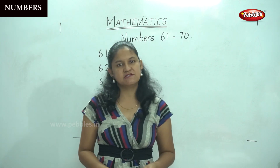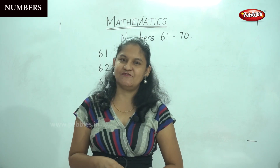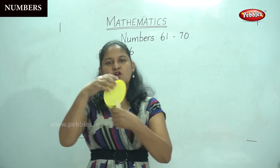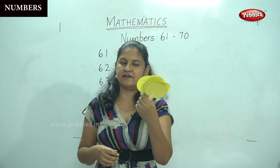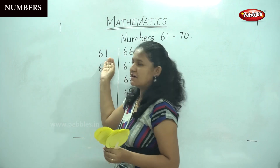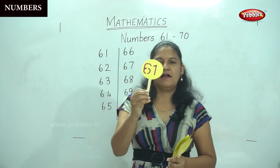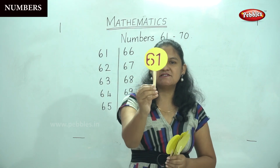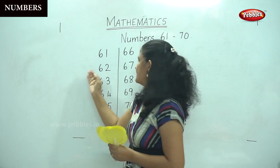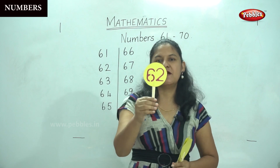So these are the numbers from 61 to 70. Now we will learn to identify the numbers using small placards. So these are called small placards that are in my hand. So I am going to take the first number. The first number that I have written on the board is number 61. So I have number 61 in my hand.